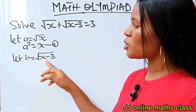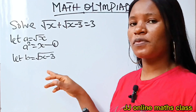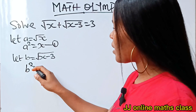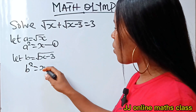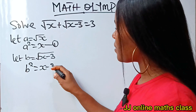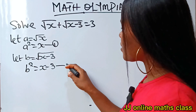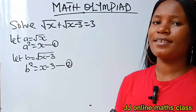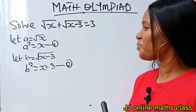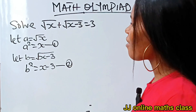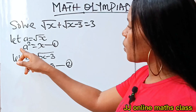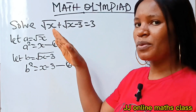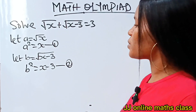If we square both sides of this equation, we'll have b² = x − 3. Let's call this equation two.